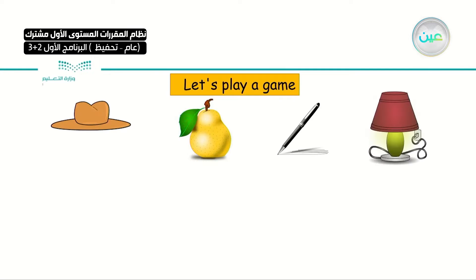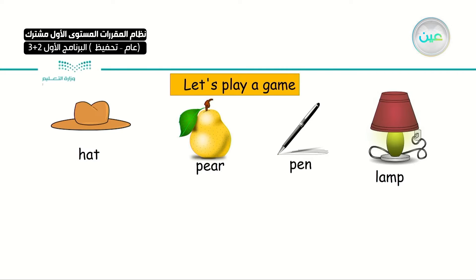Let's move to our lesson. Let's start with a short game. Look at the pictures — what is the name of each picture? The first one is a hat. A pier. A pen. And the last one is a lamp.